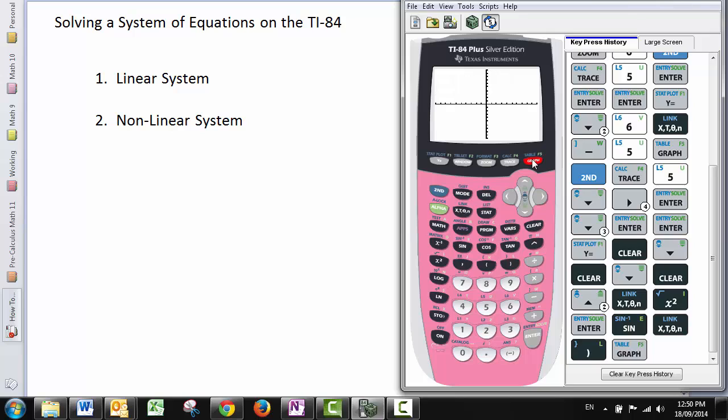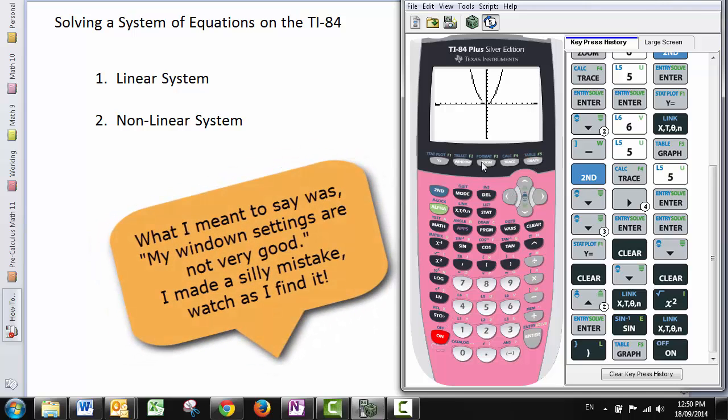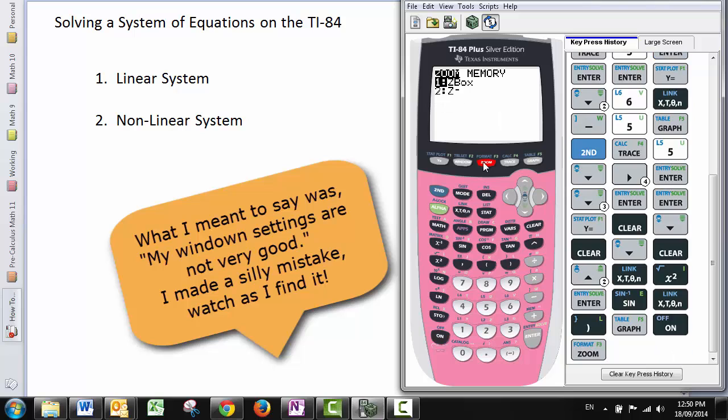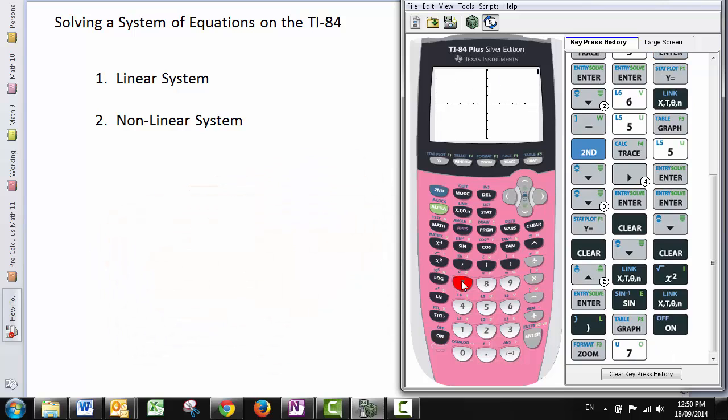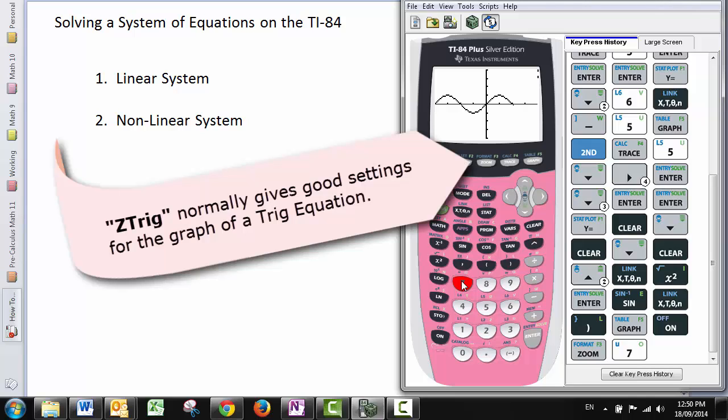And if I graph this just as it is right now, that's really not a very good set of axes for this. Let's change our zoom window to number 7 trig, since we have a trig function. And there goes our sine wave.